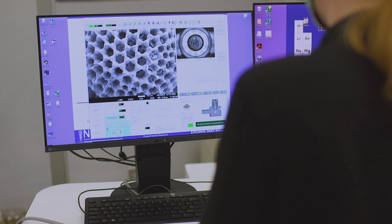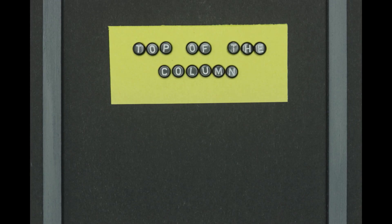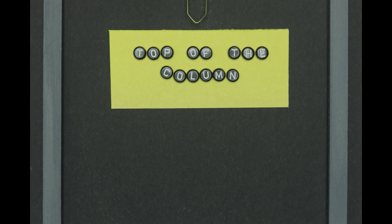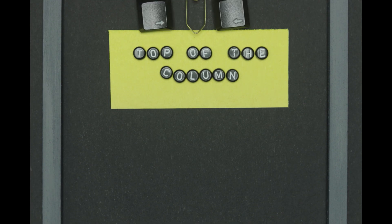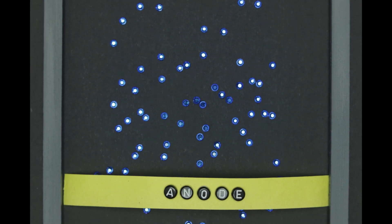So how does an SEM work? It all starts here, at the top of the column. At the top of the column is an electron gun. It generates a lot of electrons. An anode just below pulls all of the electrons off of the gun.